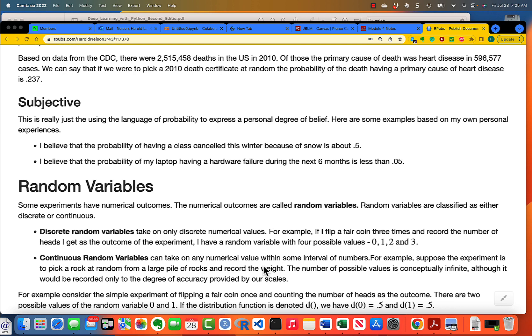A discrete random variable takes on only specific values. And the example I give here is flipping a fair coin three times and recording the number of heads I get. That's the numerical outcome. So, I have a random variable with four possible values. Zero, one, two, and three. Those are the only things that can happen. I can't get one and a half successes.